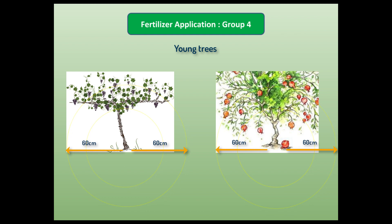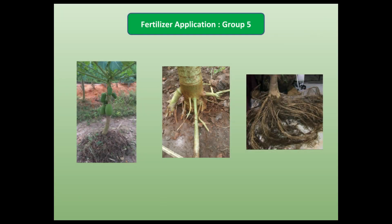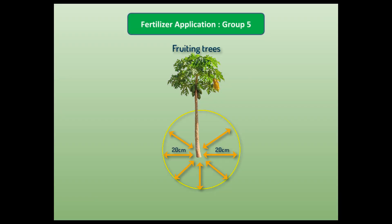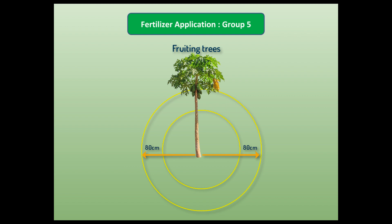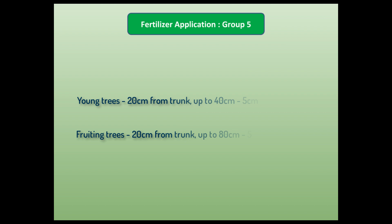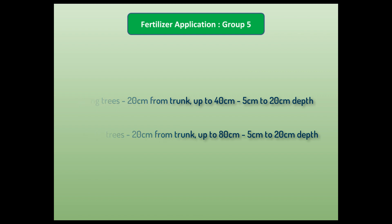In papaya, the roots are relatively closer to the trunk compared to other fruit trees — starting at 20 centimeters from the trunk and spreading up to 80 centimeters in fruiting trees. In younger plants it is about half, around 40 centimeters wide. In both cases the roots are about 5 to 20 centimeters below the soil surface, so fertilizers must be applied in a band starting from 20 centimeters from the trunk, going up to 40 centimeters in young plants and 80 centimeters in fruiting trees.